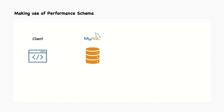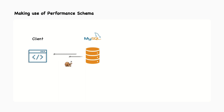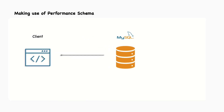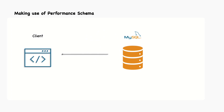When we encounter a performance problem, the first step is to determine what is causing it. Our goal is to reduce the response time and therefore we need to understand why the server requires a certain amount of time to respond to a query. In other words, we need to measure where the time goes.